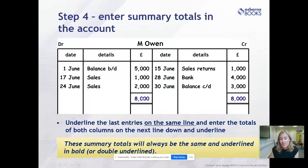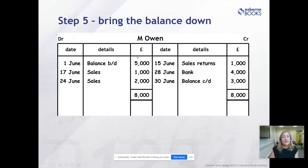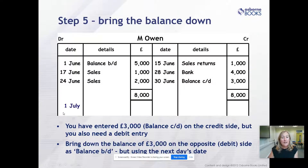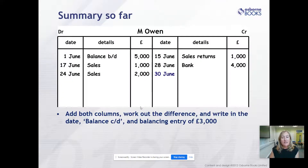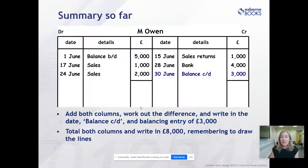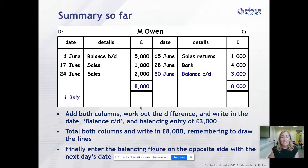We need to make sure the T-account balances - both lines need to be parallel. On the 1st of July, we bring down the balance on the opposite side. This £3,000 is carried out of June and into July as BALBD £3,000. When we do the trial balance, that £3,000 will be entered on the debit side. We credit June and debit 1st of July - ruling off the T-account and taking the balance down into the following month. It's a £3,000 debit balance because it's an asset that M. Owen owes to the business.